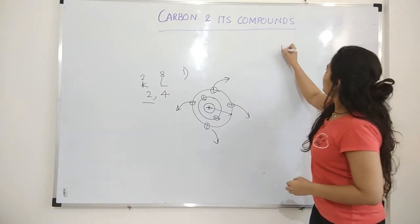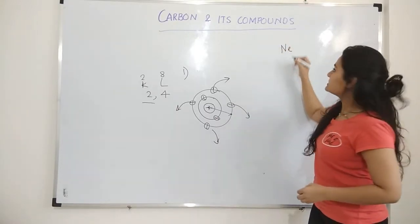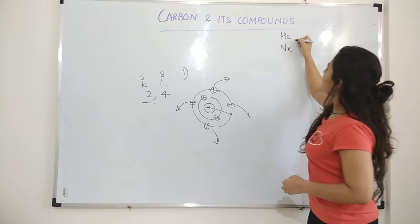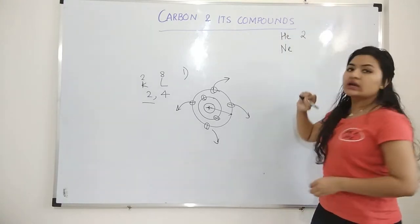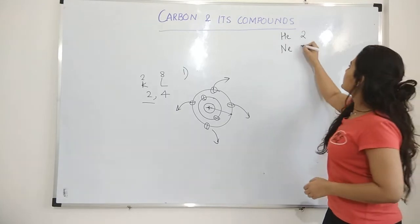What does it mean? I will take two noble gases, helium and neon. Now atomic number of helium is 2. Atomic number of neon is 10.